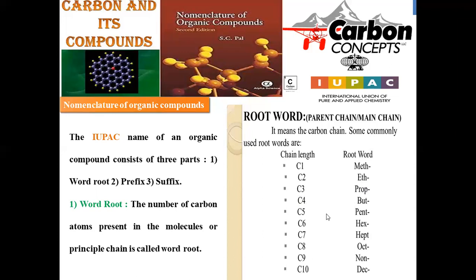This naming is fixed wherever these carbons are present. For example, if a given compound has a five carbon chain, you have to assign pent as the root word. Whenever a compound is given, we first segregate how many carbons are there and count them; based on that number it is possible to give the root word. These are the root words corresponding to C1 to C10.